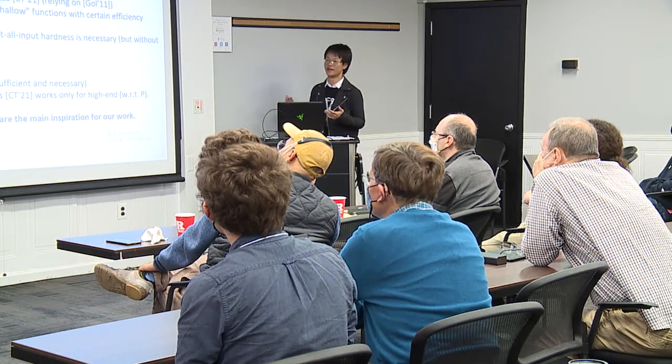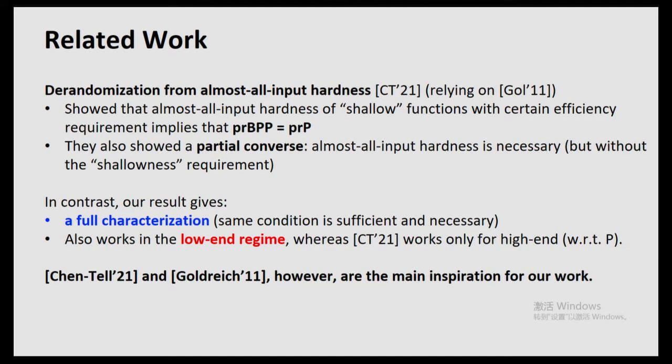Let us mention some related work. Most importantly, we want to mention Chen and Tell 2021, which shows a beautiful connection between derandomization and almost-all-input hardness. In contrast, our result gives a full characterization of derandomization — the same condition, namely leakage-resilient hardness, is both sufficient and necessary. Our result also works in the low-end setting, whereas Chen and Tell 2021 only works for the high-end, namely derandomizing BPP all the way to P. Let me mention that Chen-Tell 2021 and Goldreich 2011 are the main inspirations for our work.